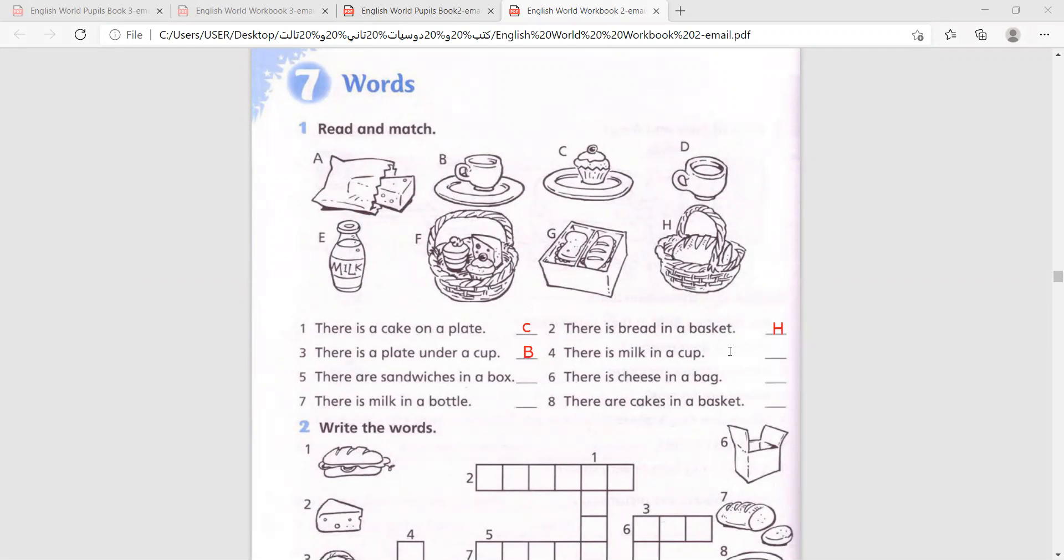So you just look and you find the suitable picture. Number five, there are sandwiches in a box, G. And there is cheese in a bag, A. Number seven, there is milk in a bottle, E. And finally, there are cakes in a basket, F. That's it. Pause and copy. Great job.